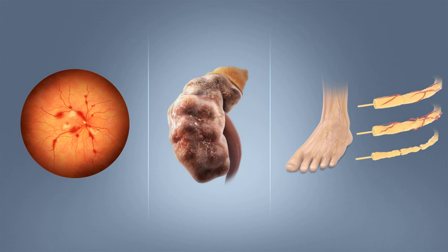The term 'mellitus,' or 'from honey,' was added by the Briton John Rollo in the late 1700s to separate the condition from diabetes insipidus, which is also associated with frequent urination. Effective treatment was not developed until the early part of the 20th century, when Canadians Frederick Banting and Charles Herbert Best isolated and purified insulin in 1921 and 1922. This was followed by the development of the long-acting insulin NPH in the 1940s.